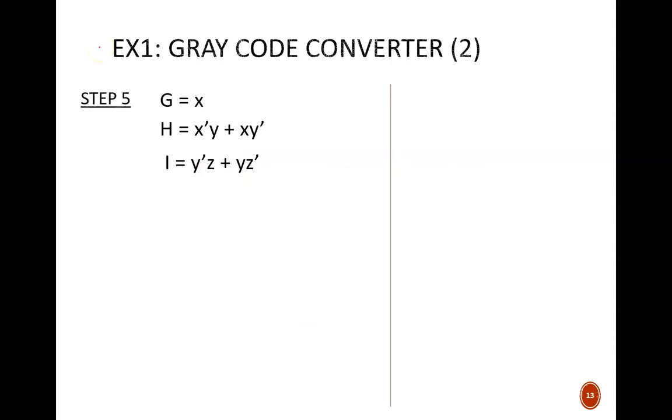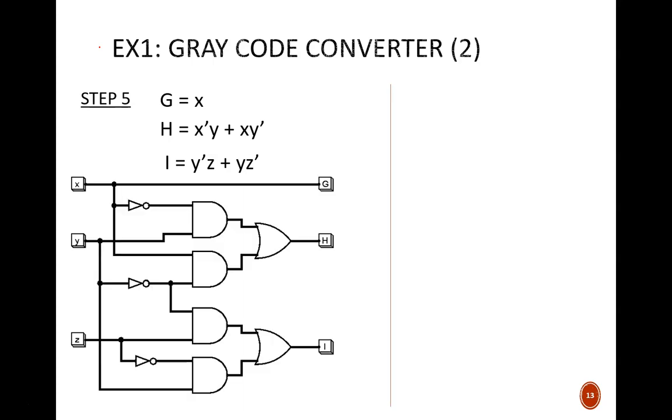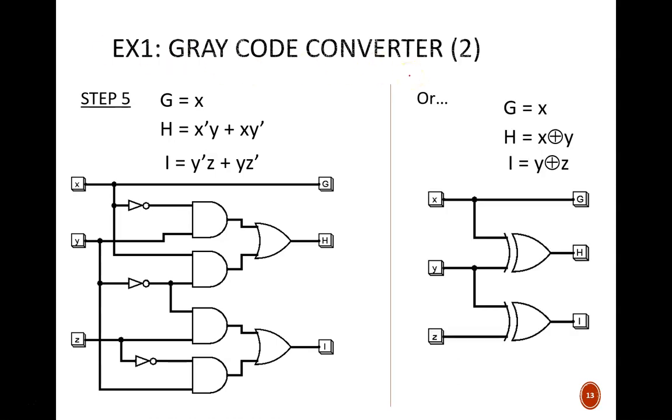Step five is to draw the logic circuit diagrams based on those equations. First, I show the circuit taken from the SOP equations. This is fine, but inefficient. Much cleaner is the circuit taken from the exclusive or equations. Certainly, drawing it this way saves time.